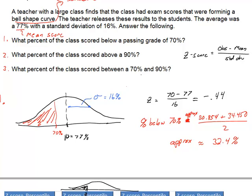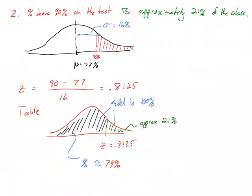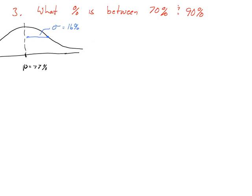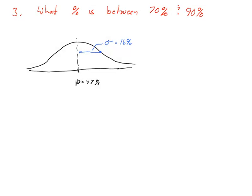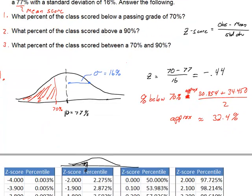Now to our third question, what percentage of the class is between a 70% and a 90%? Again, I can do the picture view of what's going on. I'm looking for this region. Here's my 70% and here's my 90%. I want the area of this region. So again, if we go straight to calculating z-scores, we'll notice that we had already done that. The 70% z-score is what we did in part one.